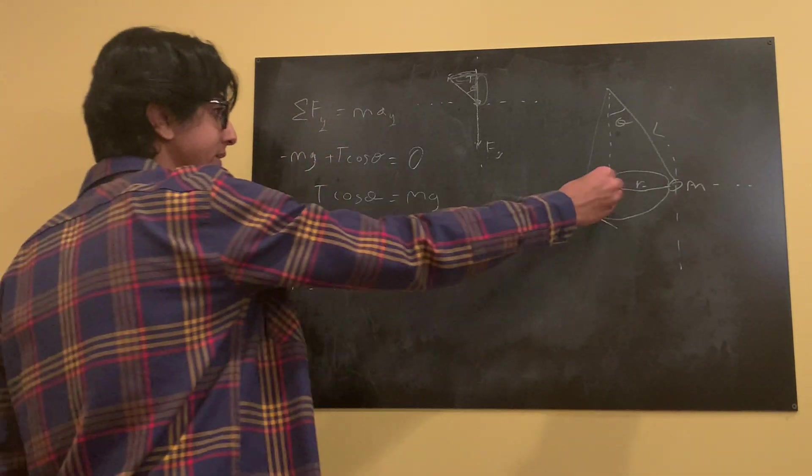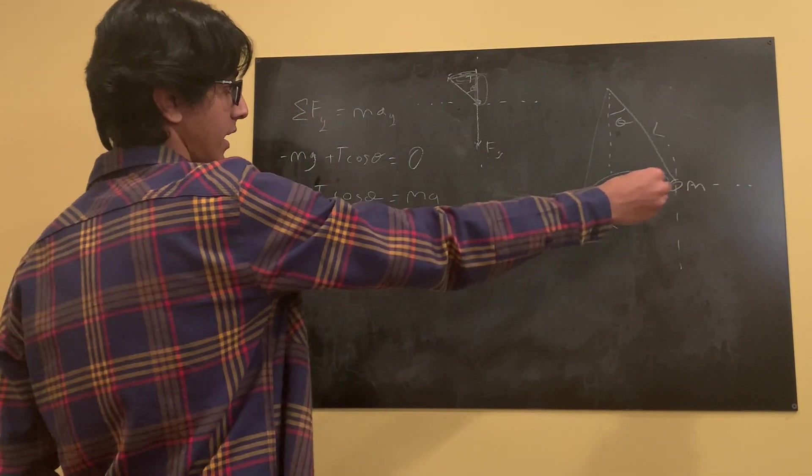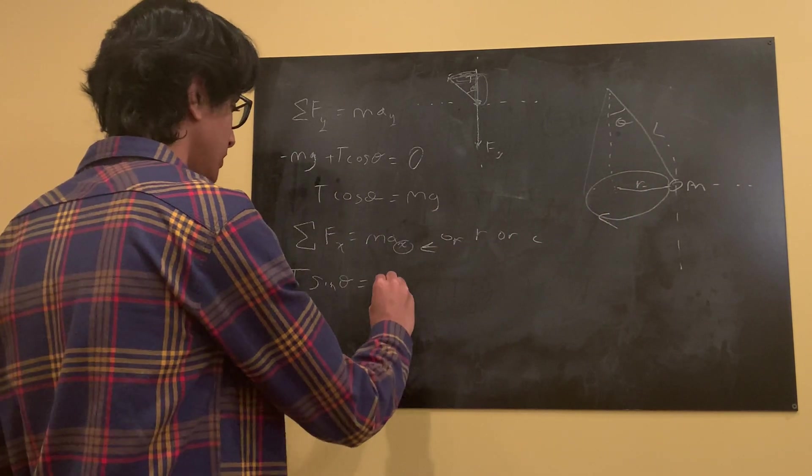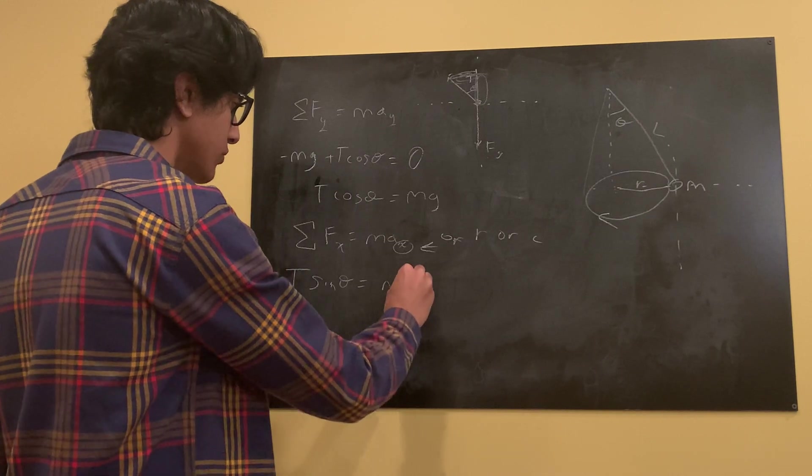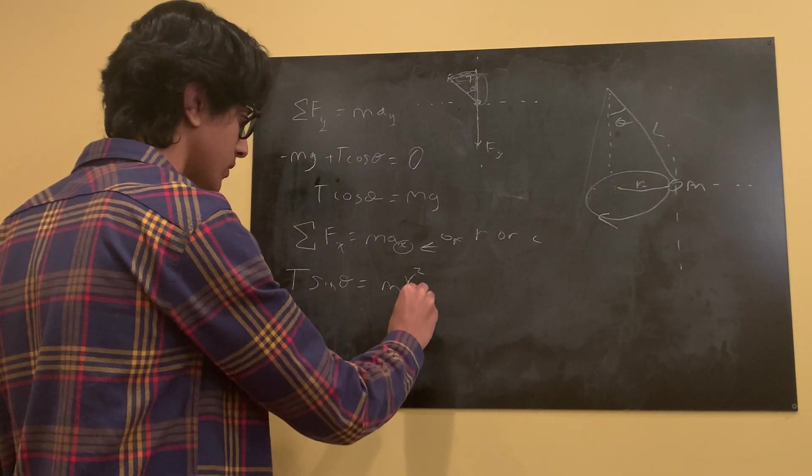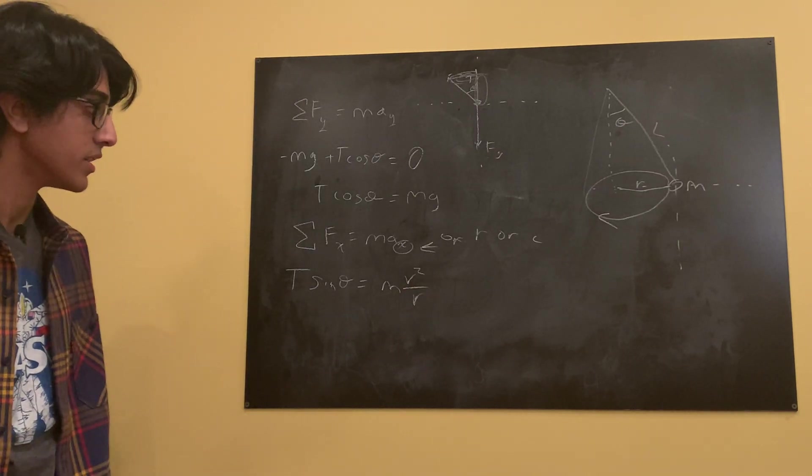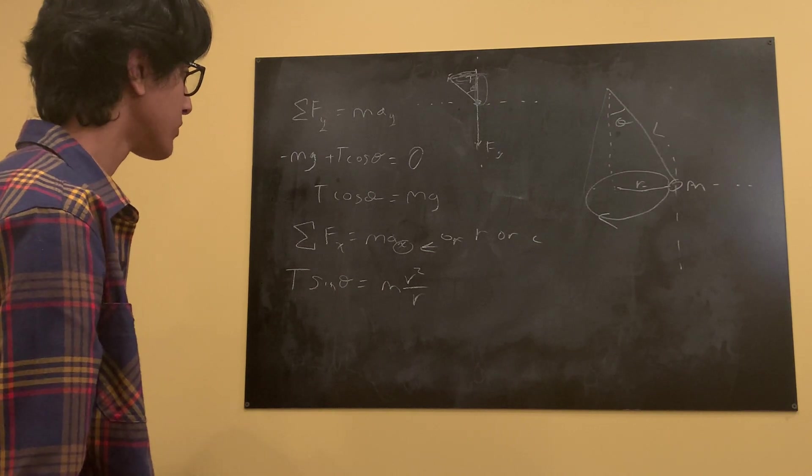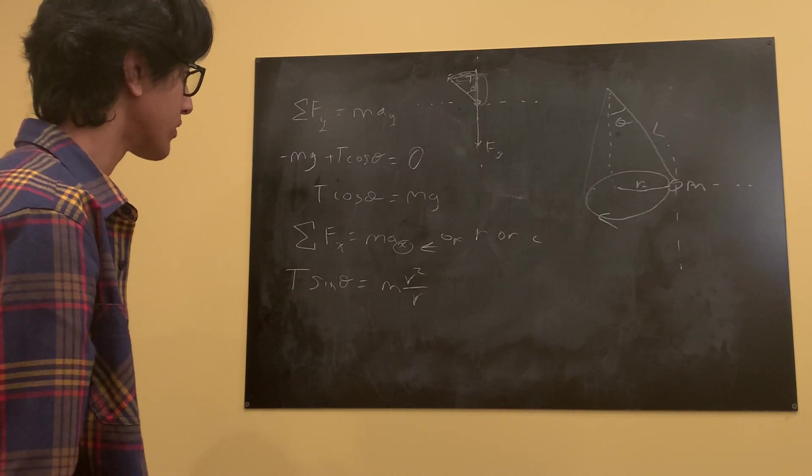Because it's all pointing center seeking. It's all going toward the center, the force. So, it's something special we can do. We can turn this a into v squared over r, since it's acceleration in the radial direction. So, now, what is our course of action? We have these two equations.